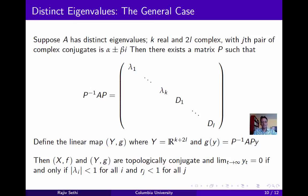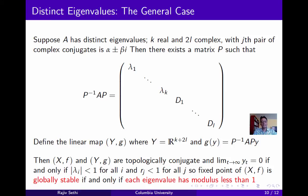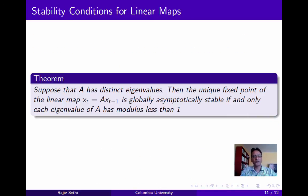Since you can express real numbers also in the complex plane, the unique fixed point of the system (X, f) is globally stable if and only if each eigenvalue of the matrix A lies in the interior of the unit disc in the complex plane. We can summarize all this as follows: suppose that the matrix A has distinct eigenvalues, then the unique fixed point of the linear map x_t = A x_{t-1} is globally asymptotically stable if and only if each eigenvalue of A has modulus strictly less than 1.